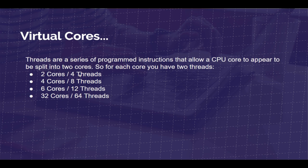Threads are a technology that allowed the physical core to appear as two cores to the computer system, giving us even more capability to delineate power across different cores when we start a process. So when we open Chrome, Photoshop, Premiere Pro, or Spotify, each of those processes can be run on a core or a thread, giving you more performance and keeping your computer from getting bogged down.